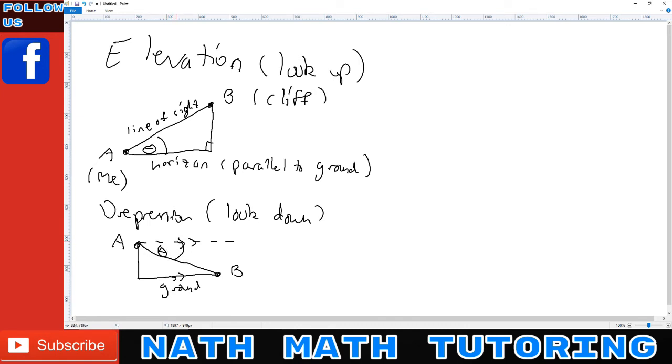But what you'll notice is because the horizon and the ground are parallel, this angle at the bottom is also theta, because these are alternate angles. So it's the angle between line of sight and horizon.